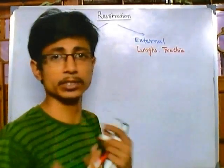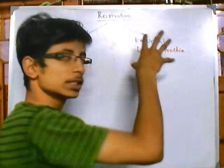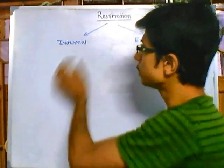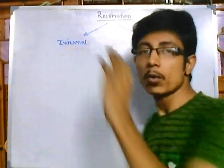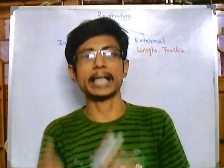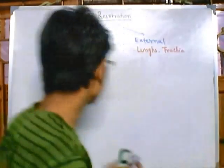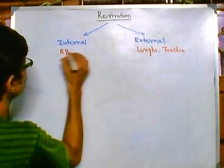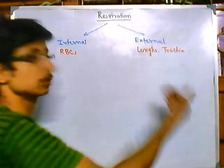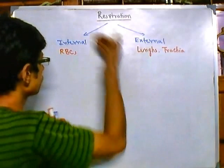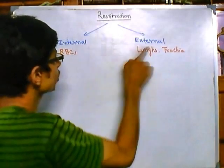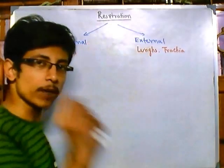External respiration involves the lungs and other systems like the trachea — the entire respiratory system of our body, both physiological and anatomical. Behind that, another set of respiration exists at the miniature level: internal respiration. This is where oxygen is carried into each of our cells, and it is brought about by red blood cells (RBCs). They bind with the oxygen taken up by the lungs, move through the bloodstream, and deliver it to your cells.